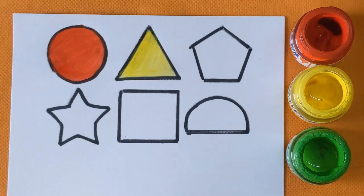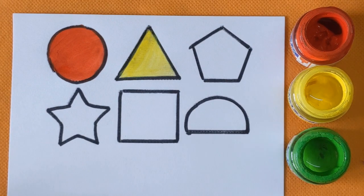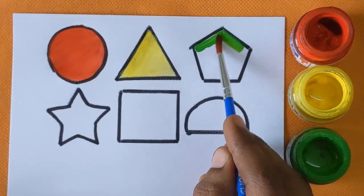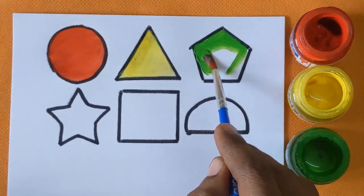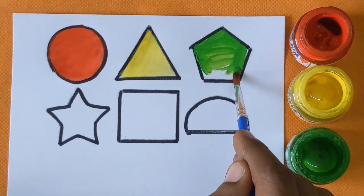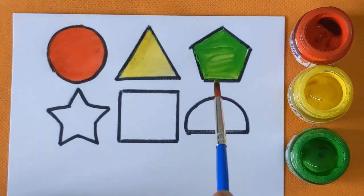Next shape is, can you tell me? Next shape is pentagon, and pentagon with the green color. Pentagon, green color.